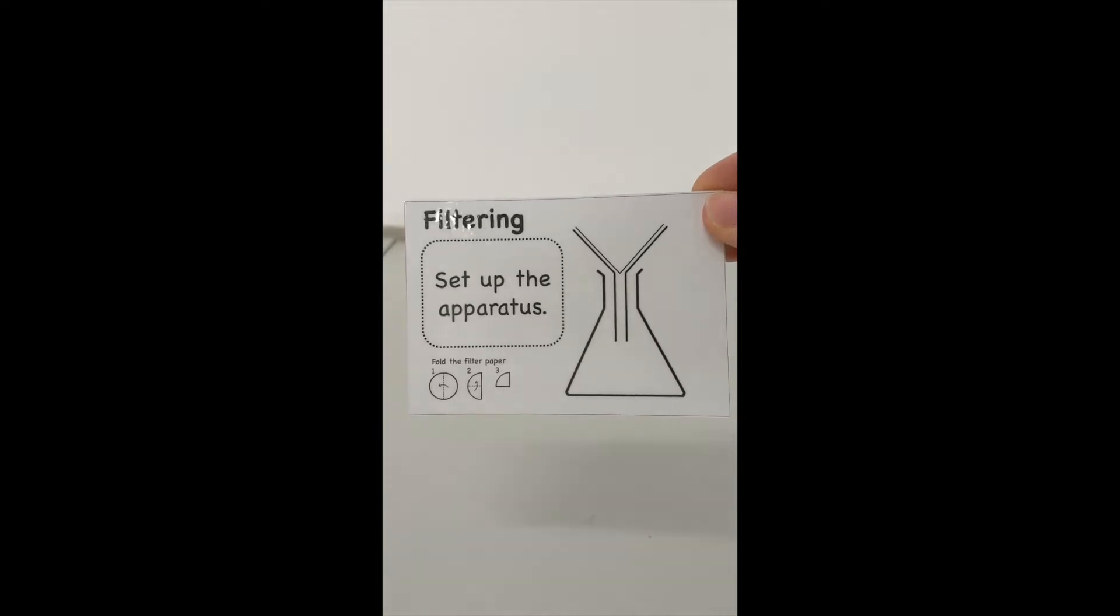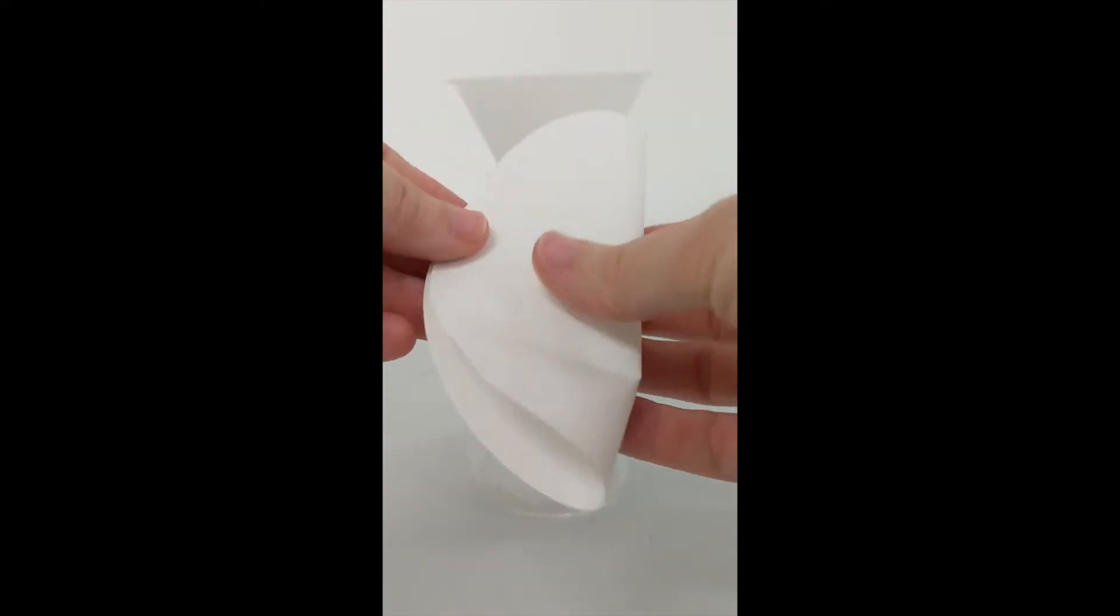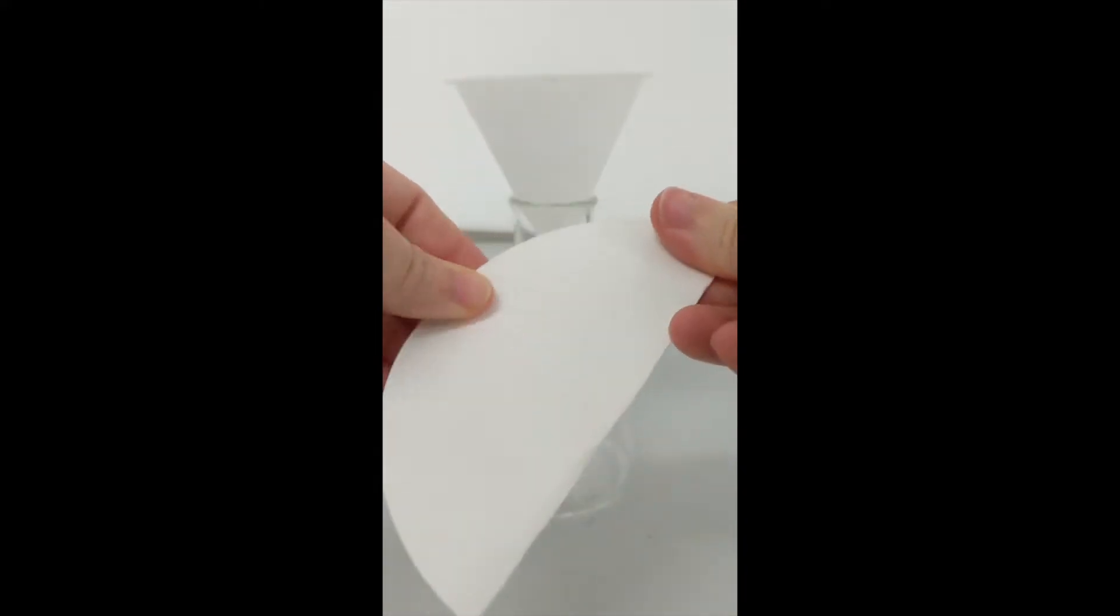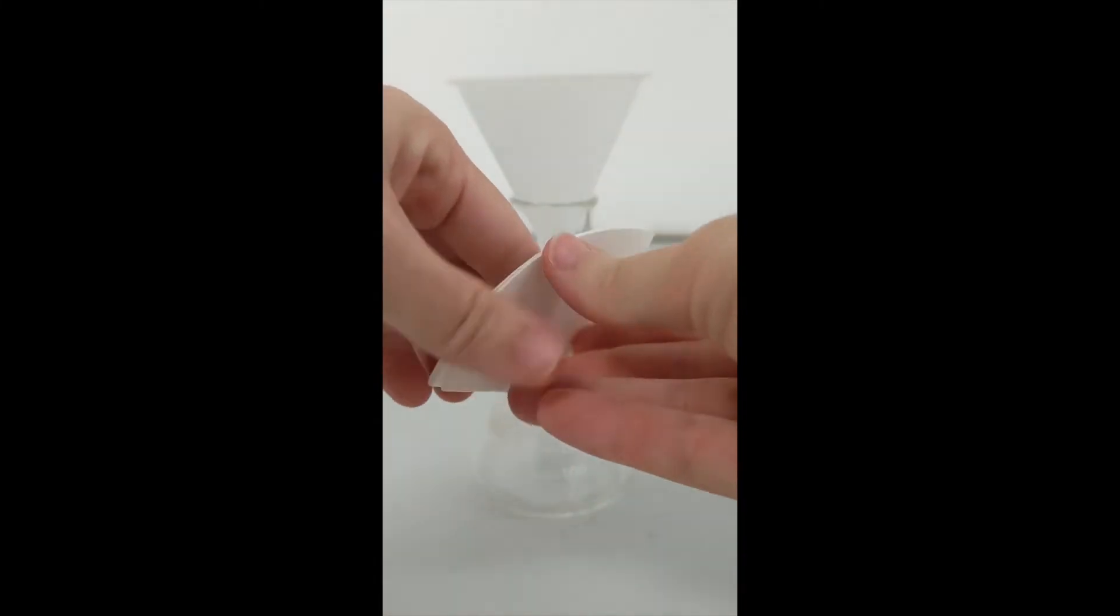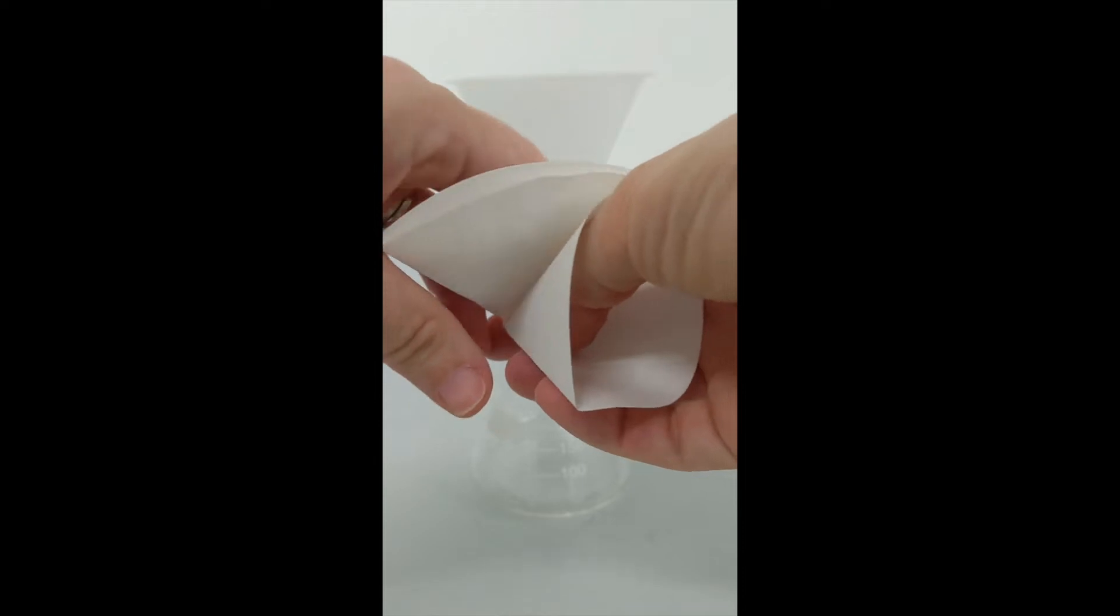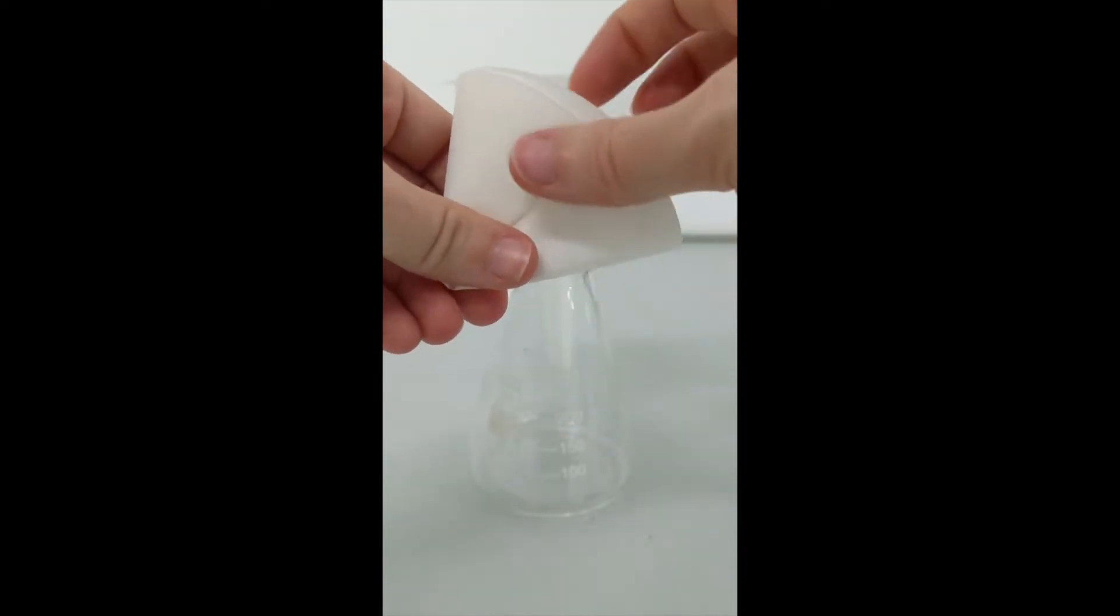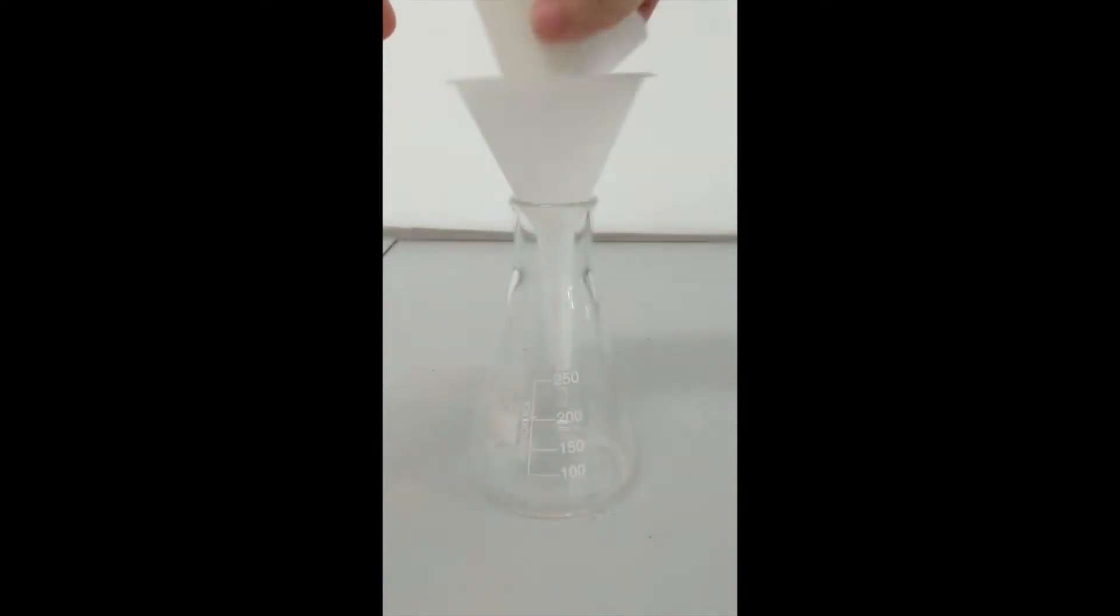Next I'm going to set up my filtering apparatus. I need a conical flask, a filter funnel, and a piece of filter paper. I fold this in half, in half again, and then I take away one side from three to make a nice little cone. That goes inside my filter funnel.